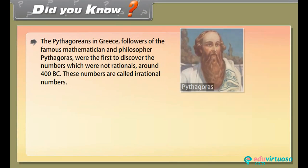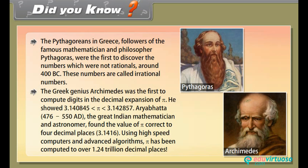Did you know the Pythagoreans in Greece, followers of the famous mathematician and philosopher Pythagoras, were the first to discover irrational numbers around 400 B.C.? The Greek genius Archimedes was the first to compute digits in the decimal expansion of pi, showing 3.140845 < π < 3.142857. Aryabhata (476–550 AD), the great Indian mathematician and astronomer, found the value of Pi correct to 4 decimal places: 3.1416. Using high-speed computers and advanced algorithms, Pi has been computed to over 1.24 trillion decimal places.